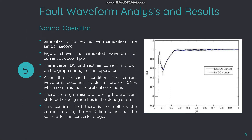Now for the results and waveform analysis: this figure shows the normal operation of the HVDC system. The simulation is carried out with a simulation time set to one second. The inverter DC and rectifier current are shown on the graph during normal operation. After the transient condition, the current waveform becomes stable at around 0.25 seconds. There is a slight mismatch during the transient state, but in steady state it exactly matches, confirming there is no fault as the current entering the HVDC line comes out the same after the converter stage.